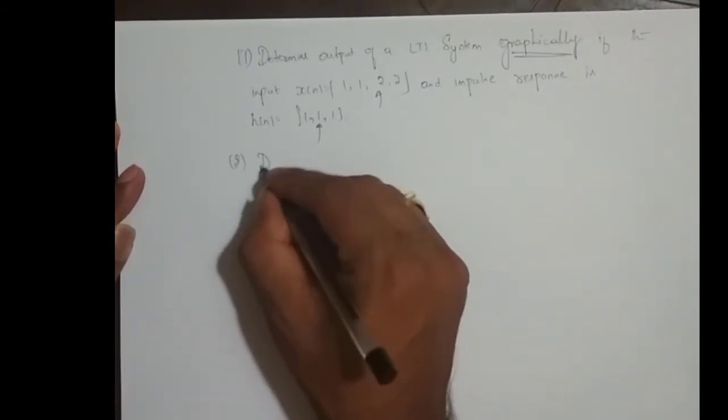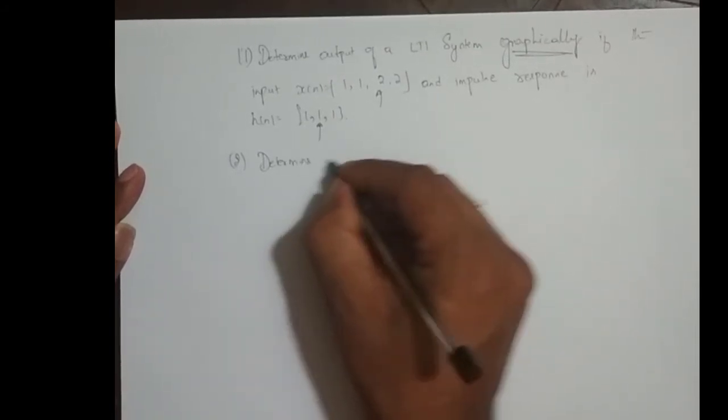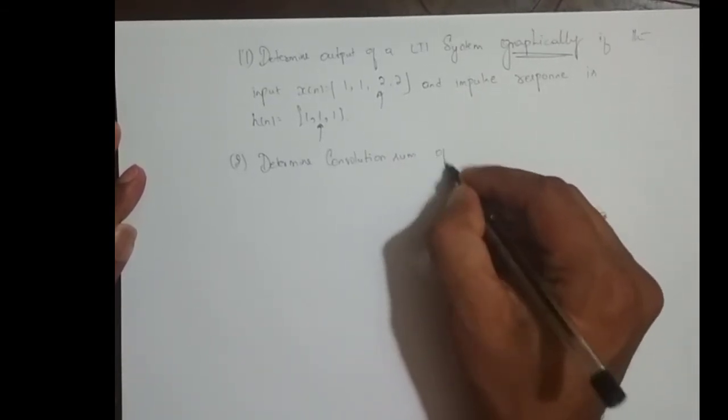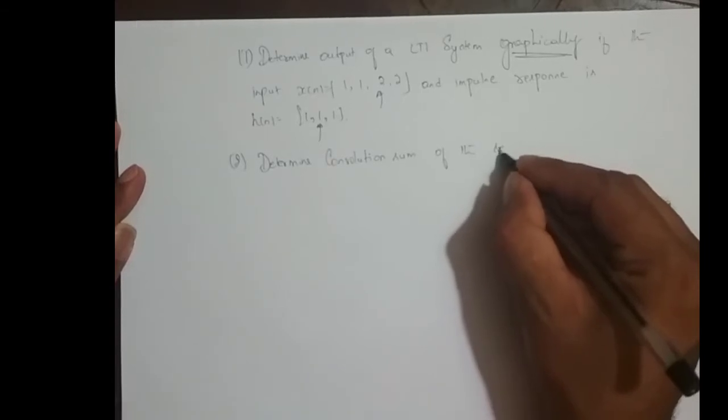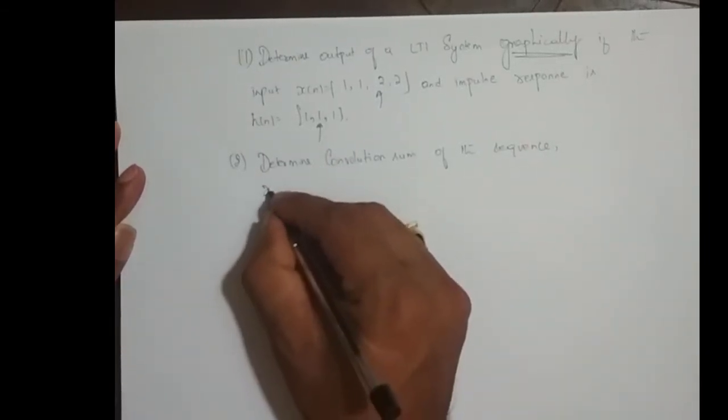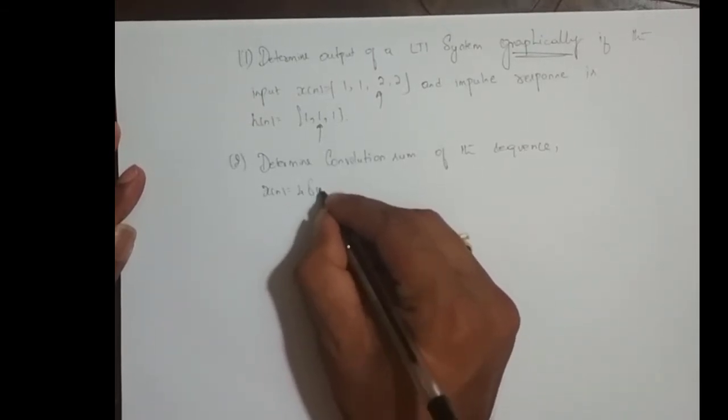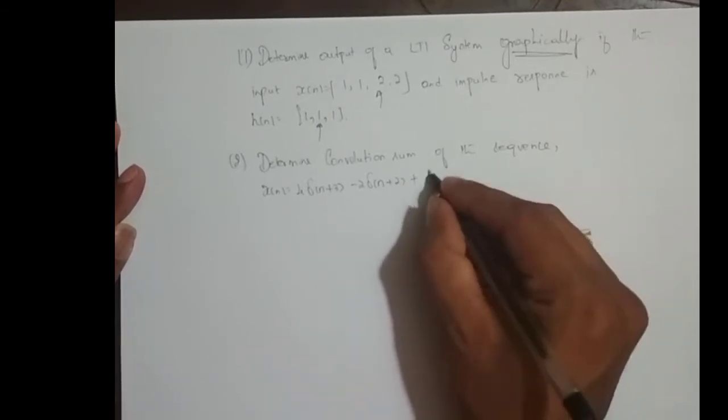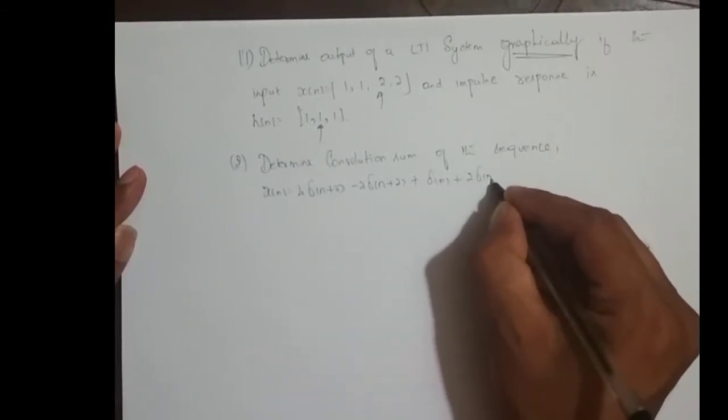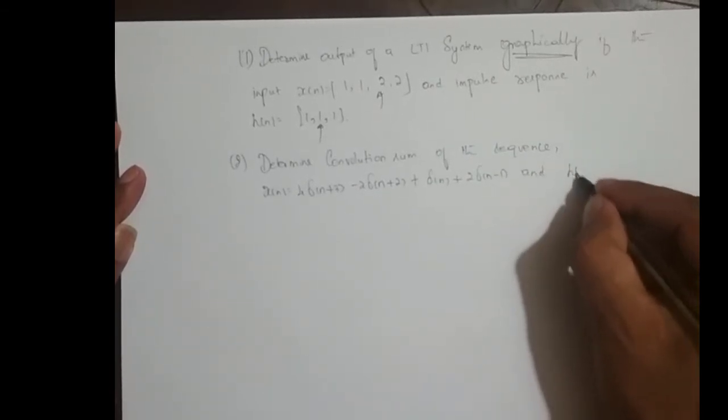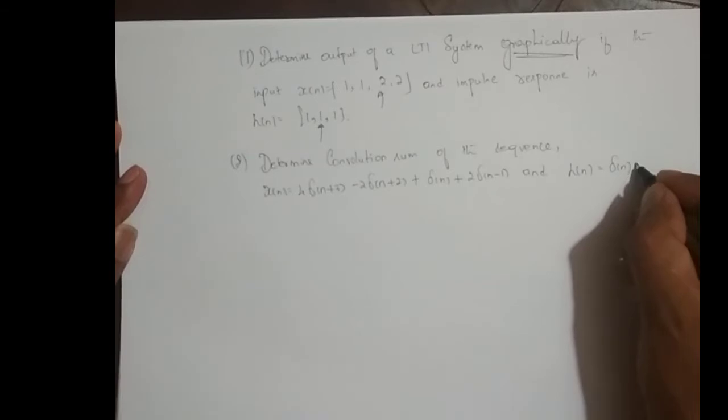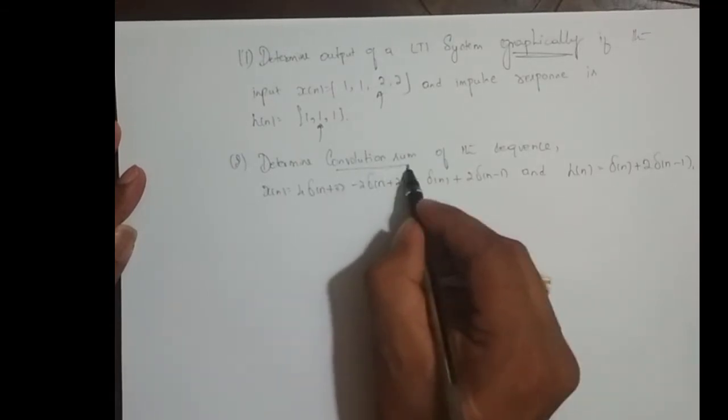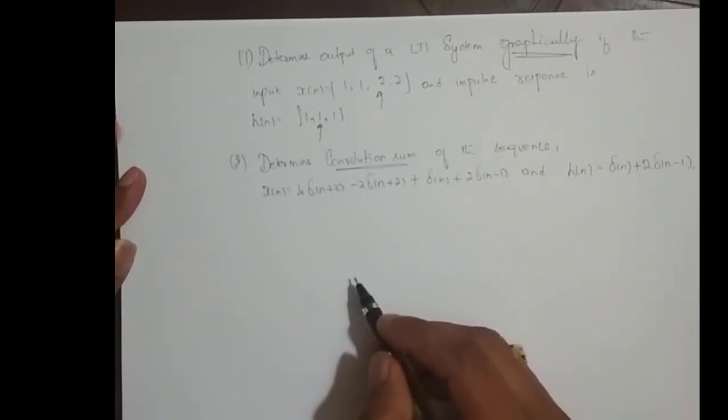Second one, determine convolution sum of the sequence x of n is equal to 4 times delta of n plus 3, minus 2 times delta of n plus 2 plus delta of n plus 2 times delta of n minus 1 and h of n is equal to delta of n plus 2 times delta of n minus 1. So convolution sum is nothing but again output of an LTI system.